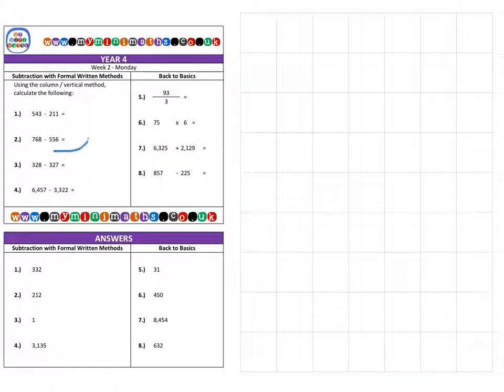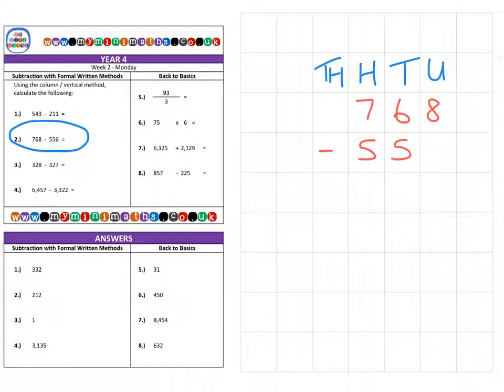Next, we're on to question two. Again, we need to use the columns: units, tens, hundreds, and be aware of those thousands. Question two is 768 subtract 556.